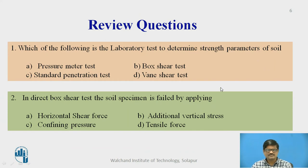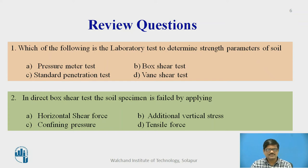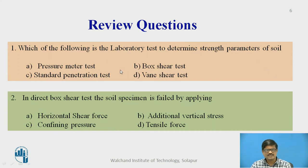Before we proceed further, let us consider these questions. Two MCQs are posted — please read carefully and answer them. The first question is: which of the following is the laboratory test to determine the strength parameter of soil? The second question is: in the direct box shear test, the soil specimen is failed by applying — four options are given. Take a pause and get the answer.